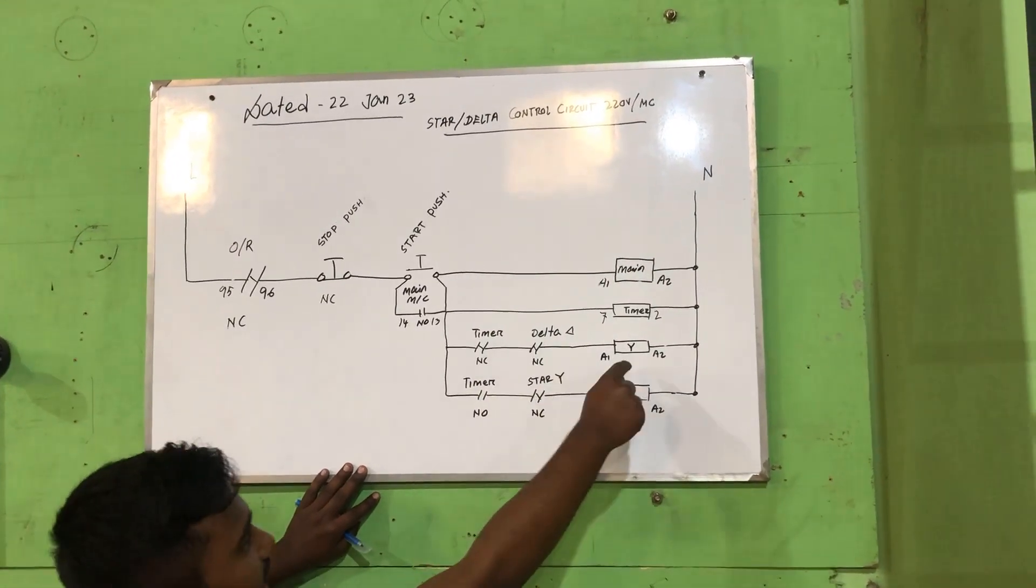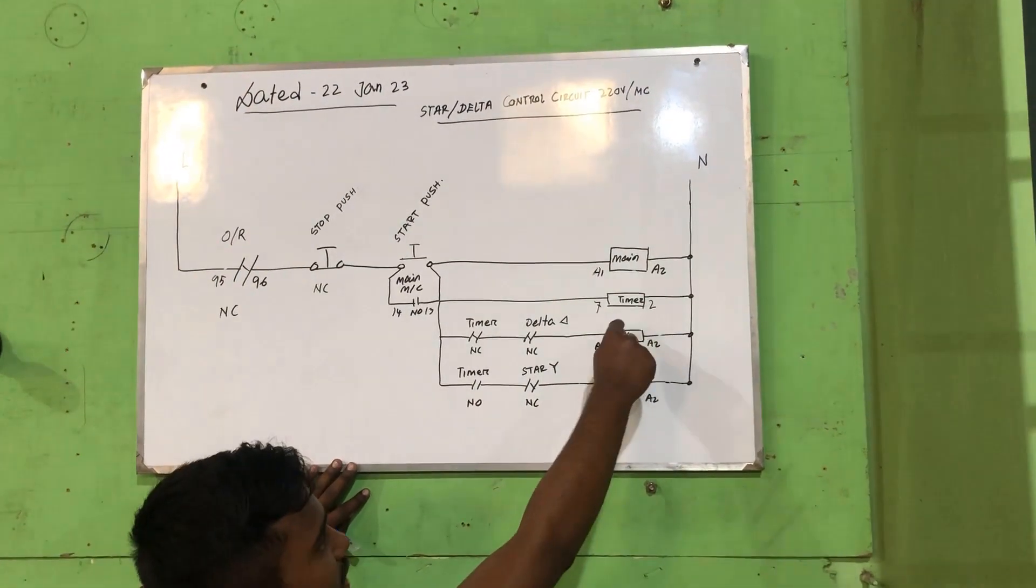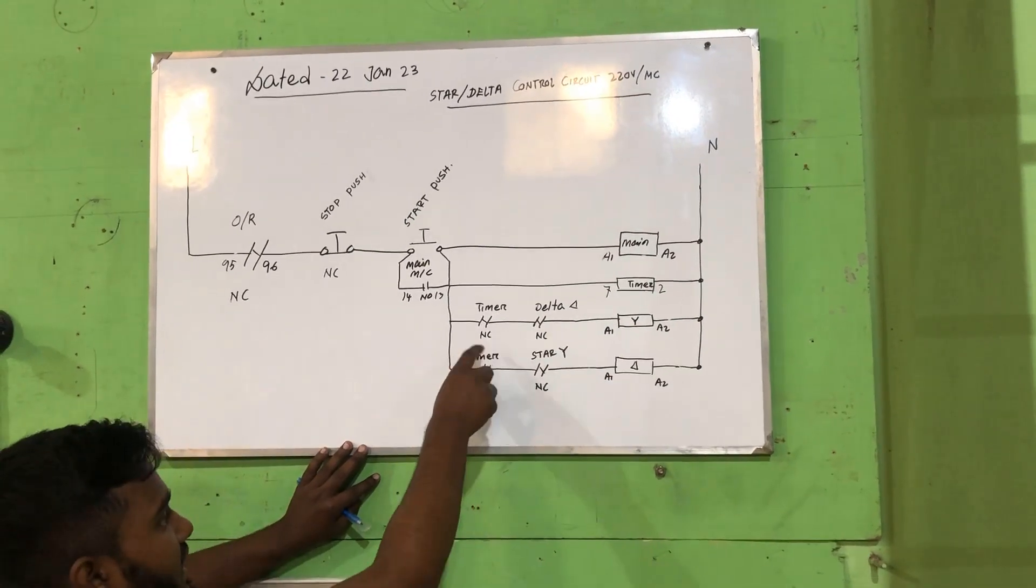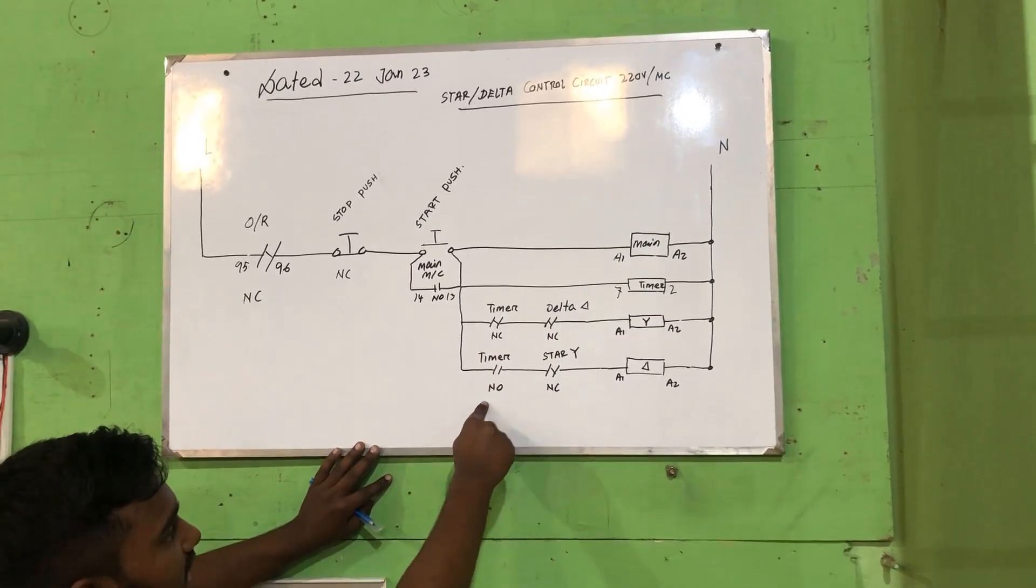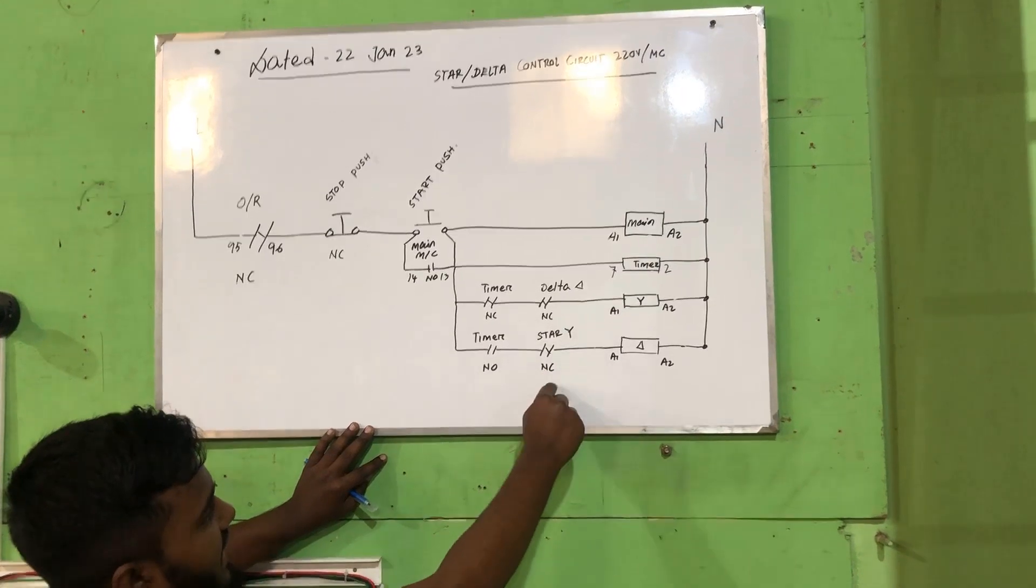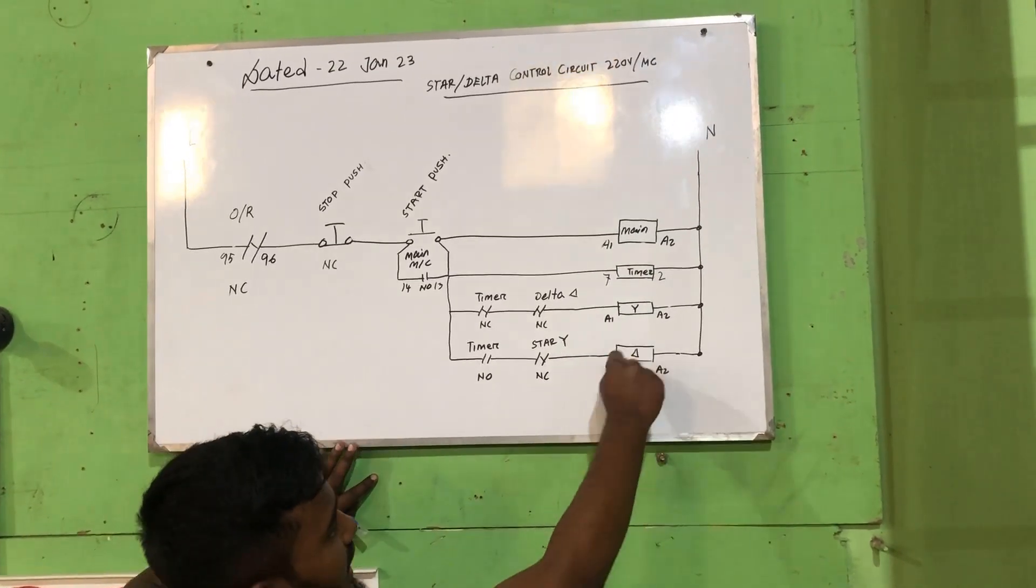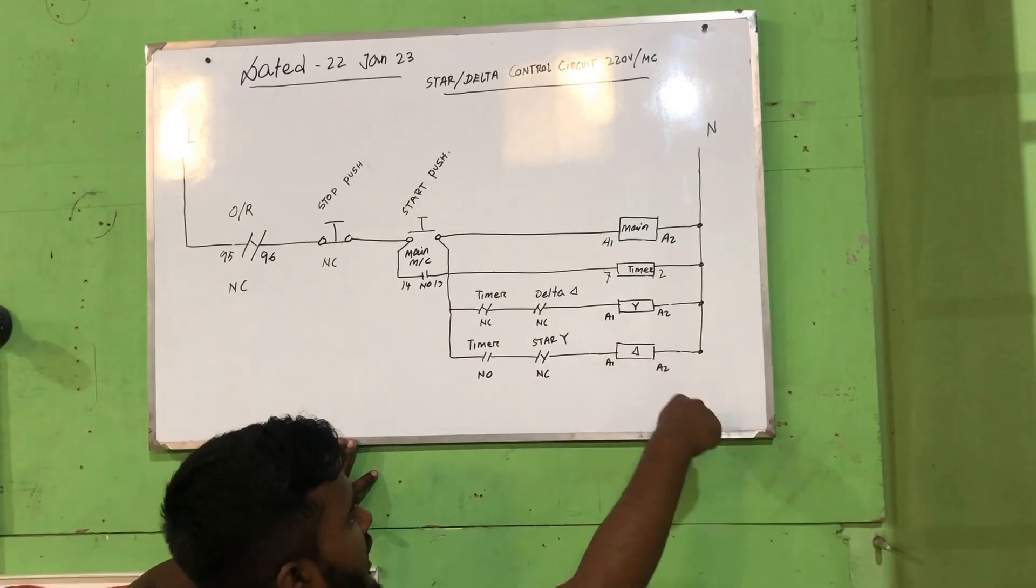Delta NC via star, star holding coil. Then it is timer NO goes to star NC via delta holding coil.